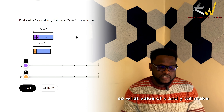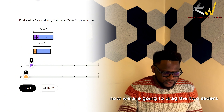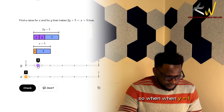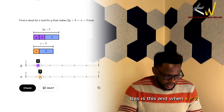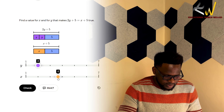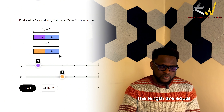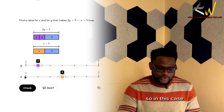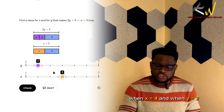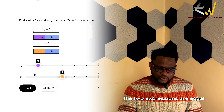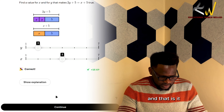What value of x and y will make 2y plus 5 and x plus 5 equal? We drag the two sliders until both expressions are equal. We can see that when x is 4 and y is 2, the two expressions are equal. So the value of y is 2 and the value of x is 4.